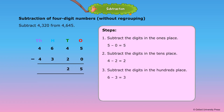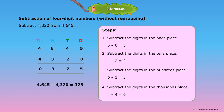Step 3: Subtract the digits in the hundreds place. 6 minus 3 is equal to 3. Step 4: Subtract the digits in the thousands place. 4 minus 4 is equal to 0. Therefore, 4,645 minus 4,320 is equal to 325.